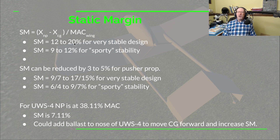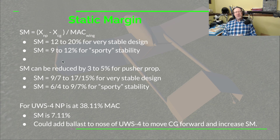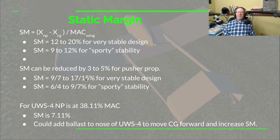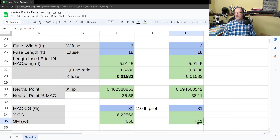According to Dan's book, a static margin of 12 to 20% is very stable, and 9 to 12% is sporty — meaning more maneuverable. For a pusher prop, you can reduce these thresholds by 3 to 5%. So for a pusher: very stable is roughly 7 to 15%, and sporty is 4 to 7–9%. Our static margin is 7.11%, which means for our lightest 110-pound pilot we are just barely into the sporty category.